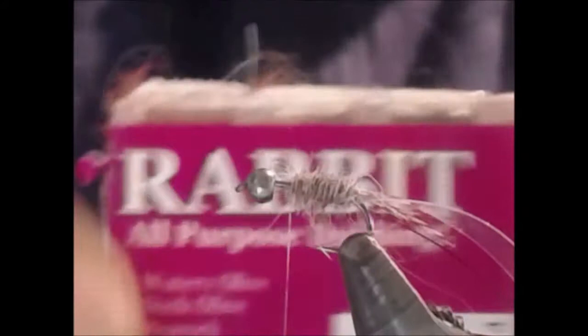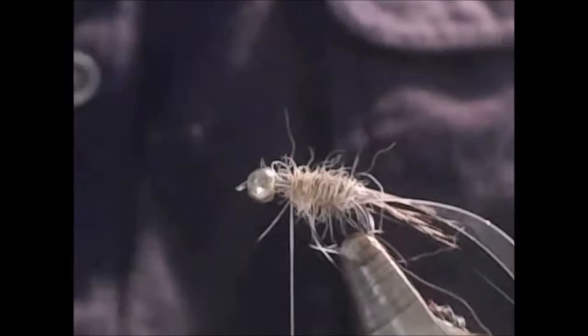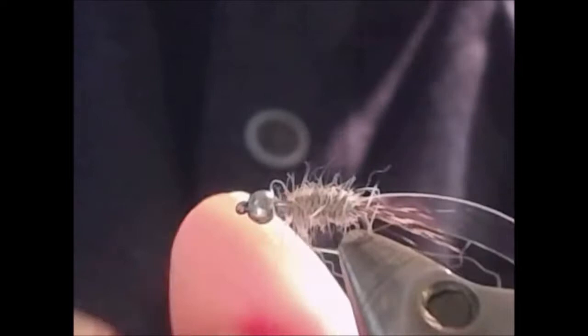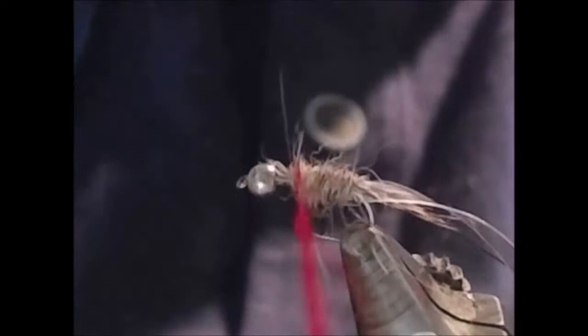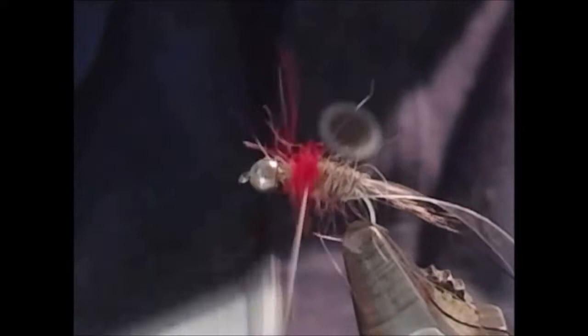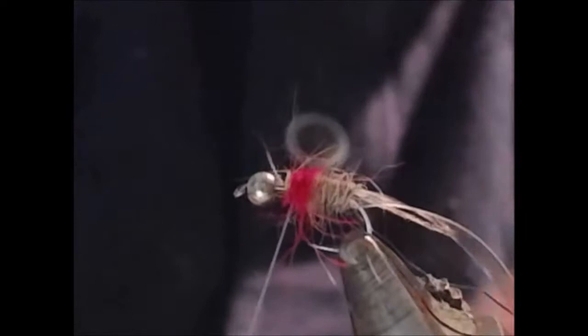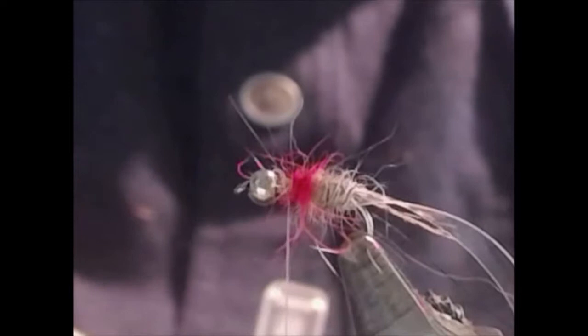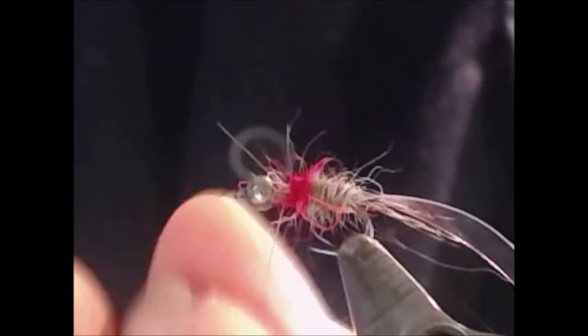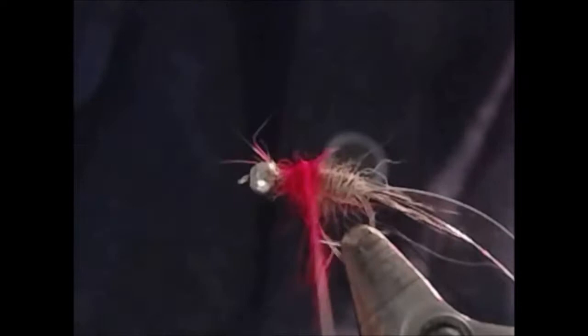At this point, I'm going to tie on some red rabbit. This becomes a hot spot or an egg sack, whichever one you prefer. We're not going to tie it too much forward. We want to make sure we have plenty of room there in front of our material. We'll go back and size it a little bit. We want to make sure we've got some shank there to work with.